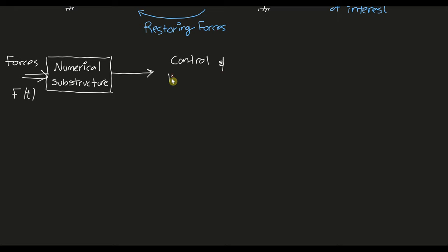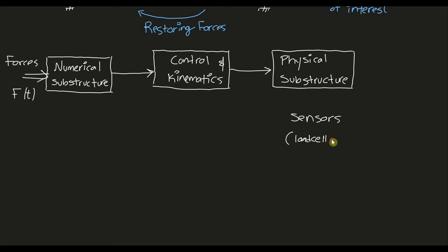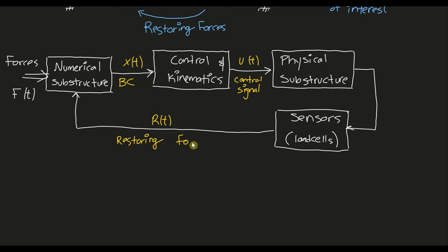Then, within the numerical substructure, the displacements at the boundary conditions with the physical specimen are computed. Next, a control and kinematic algorithm are added to make sure that the substructures can correctly communicate with each other. And lastly, physical execution is complete via actuators and restoring forces are recorded and returned to the numerical model for the next step of the simulation.